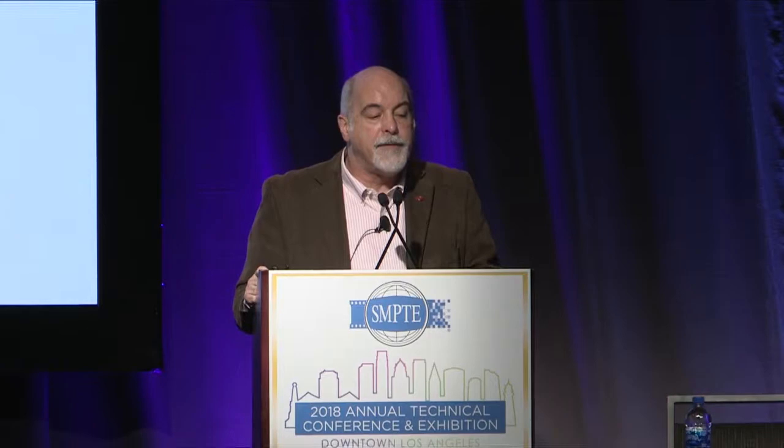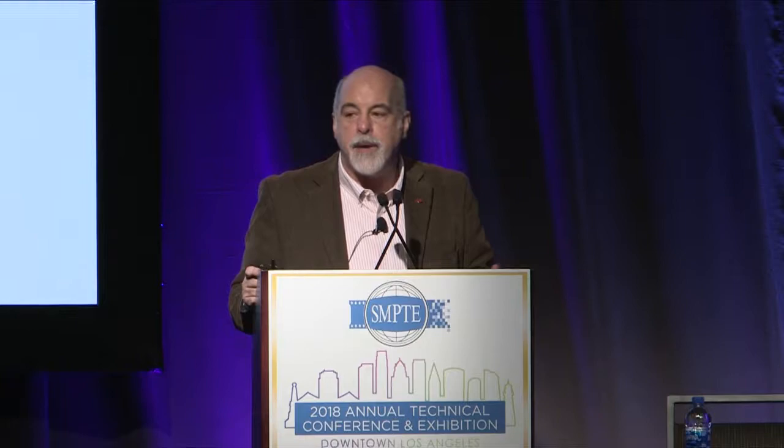Much like other groups, ISO, IEC, and ITU have looked to streamline the process. They've recognized they could drop some steps. The FCD, or final committee draft, has been dropped, and the FDIS has become an optional step. If it's a simple ballot, you could skip the final draft international standard; if it's a very detailed document, you may want to send it through for a second pass with editorial fixes.